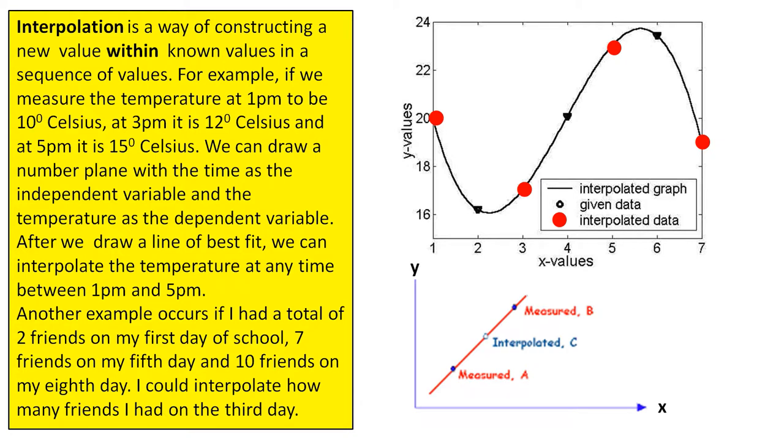We can draw a number plane with the time as the independent variable and the temperature as the dependent variable. After we draw a line of best fit, we can interpolate the temperature at any time between 1pm and 5pm.